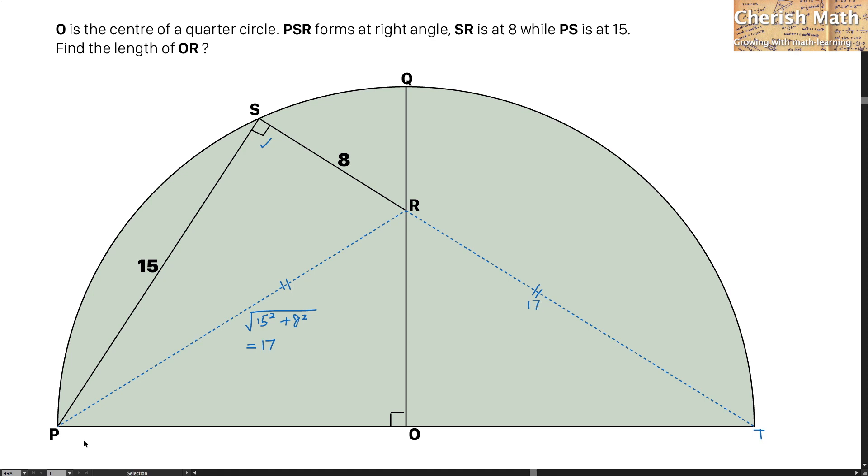OP is the radius of this semicircle. Now I'm going to label with the letter R, and it is the same with OT. I'm going to put up R as well.